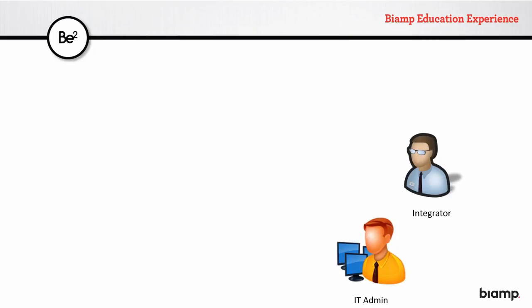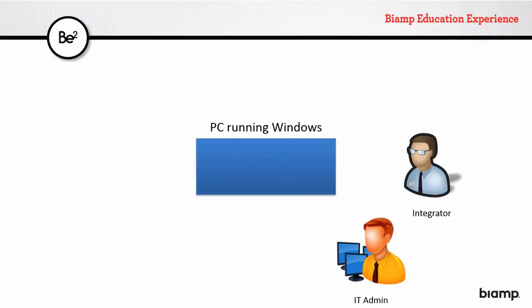So what is Orino? Orino is a control surface that allows you to control TESIRA systems. It all starts with an integrator and an IT admin working together to install Orino on a PC running Windows. Originally it was thought to be more of an IT product, but it is a Biamp-branded product, so our integrators are going to be involved in the installation process. This will be installed on a PC that belongs directly to the customer.